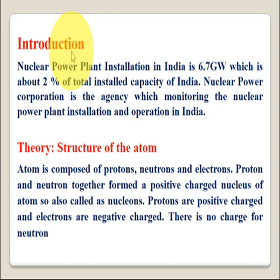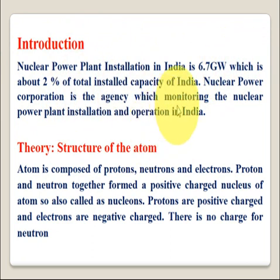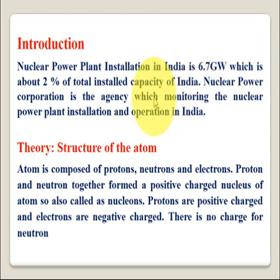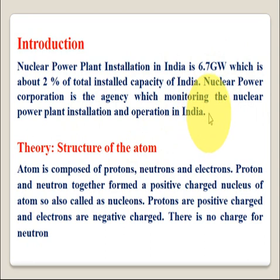For introduction, the nuclear power plant installation in India is 6.7 gigawatts, which is about 2% of total installed capacity in India. Globally, nuclear power plant installation is comparatively less than other power plants. The Nuclear Power Corporation is the agency which monitors nuclear power plant installation and operation in India. Similarly, in various countries there are agencies which monitor the installation and operation of nuclear power plants.